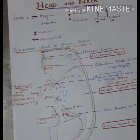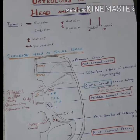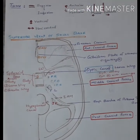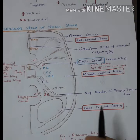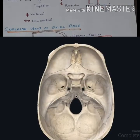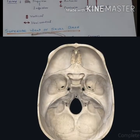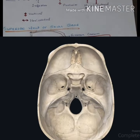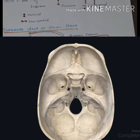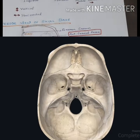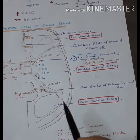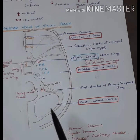First of all, we can look into the superior view of the skull base. We can see the cranial fossa is divided into mainly three parts: the anterior cranial fossa, middle cranial fossa, and posterior cranial fossa.